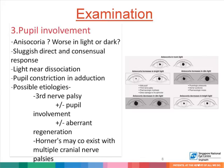Common etiologies that might present with double vision as well as pupil abnormalities are a third nerve palsy, which may involve the pupil or which may be associated with aberrant regeneration. Rarely, Horner's syndrome may coexist with multiple cranial nerve palsies as well.